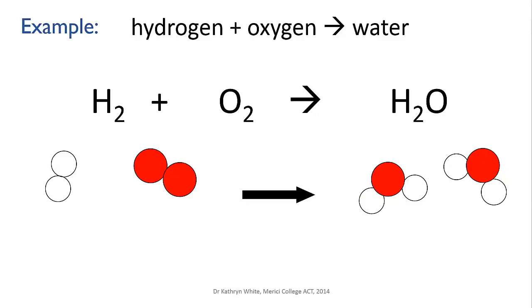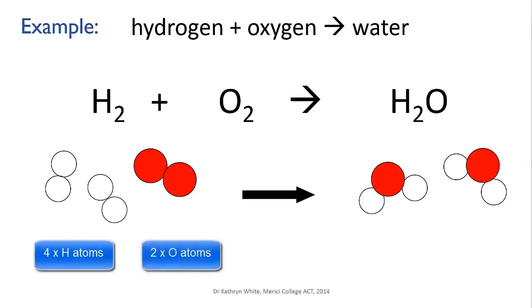So what do we do? Well, we just need a little more hydrogen on the reactant side. And now we're good. We've got four hydrogens and two oxygens on the left, and four hydrogens and two oxygens on the right, but rearranged this time into two water molecules.